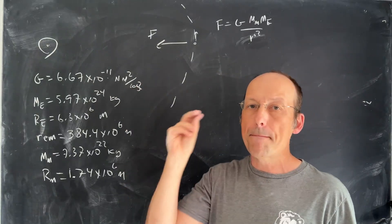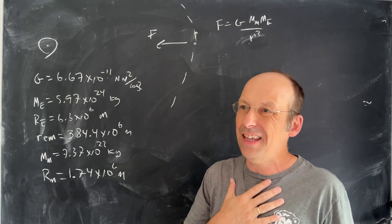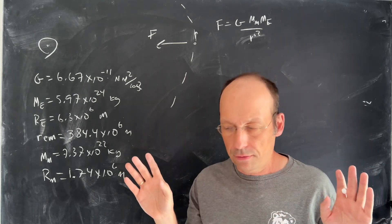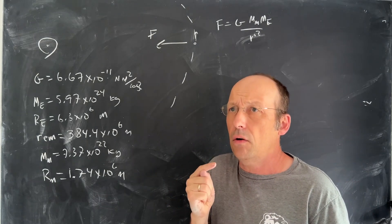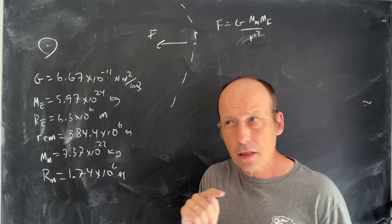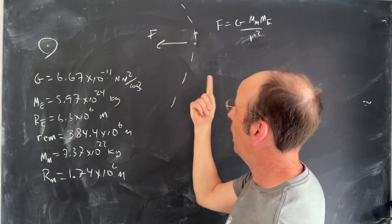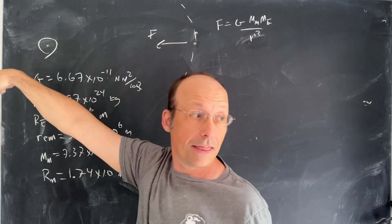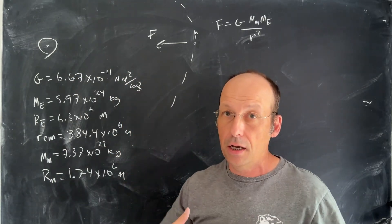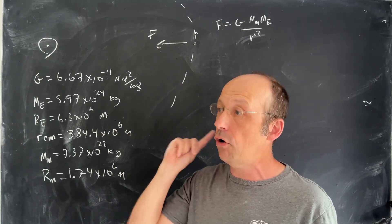I want to talk about momentum and the Earth-Moon system because there's some really cool stuff here. We've already looked at orbits, but I want to look at the moon orbiting the earth and ignore everything else. I'm going to show you something awesome. We know that the moon orbits the earth and we're going to model that in Python.